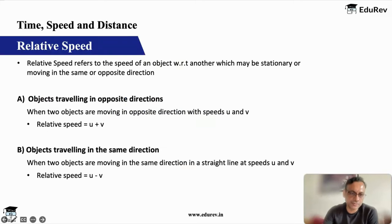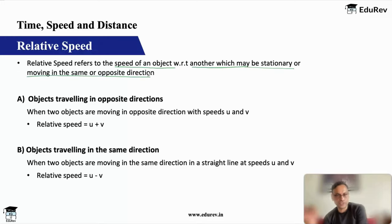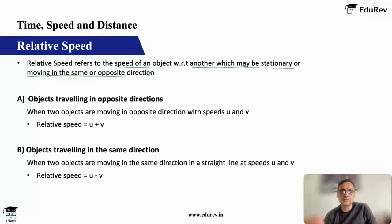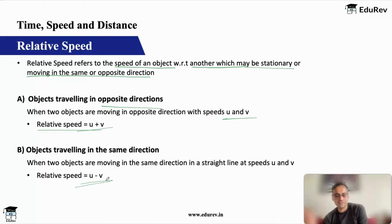So basically, what is the concept of relative speed? Relative speed refers to the speed of an object with respect to another one which may be stationary or moving in the same direction or opposite direction. We normally apply relative speed when two bodies are in motion moving in the same or opposite direction. When objects are traveling in opposite directions with speeds u and v, the relative speed is u plus v. If they are moving in the same direction, the relative speed is u minus v, whether in kilometers per hour or meters per second.